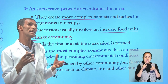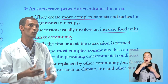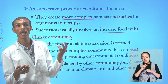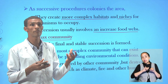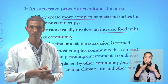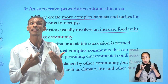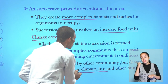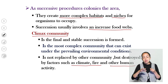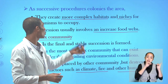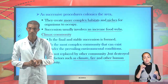Different areas have different climax communities, because the climax community of a given area is affected by factors like temperature, soil depth, and precipitation. This type of community is never replaced by another community, but it can be affected by environmental and human factors. The way by which succession leads to replacement of communities is through the formation of a climax community.